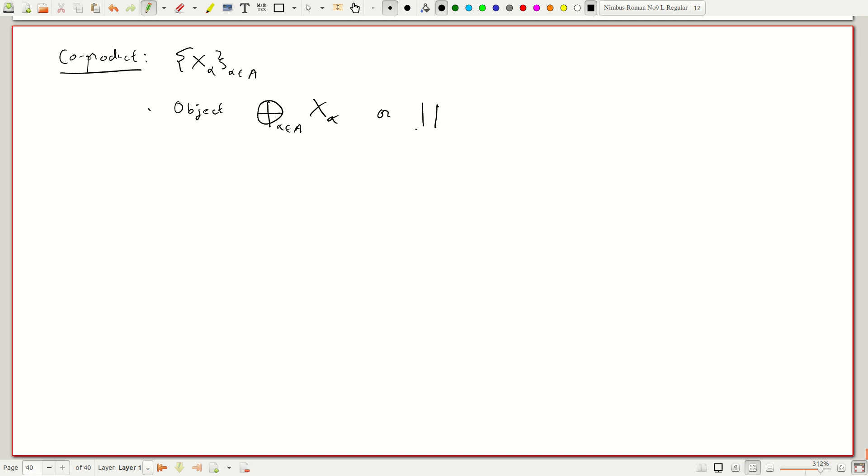This is often denoted this way standing for upside down product sign, coproduct sign. We have inclusion maps from x_alpha into the coproduct, alpha in A of x_alpha.